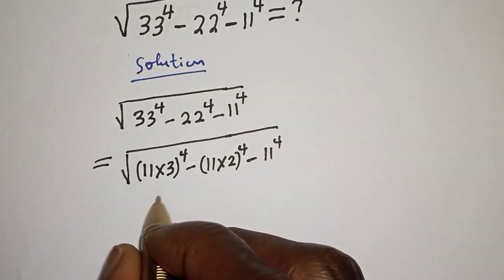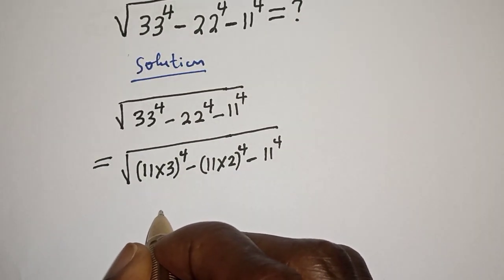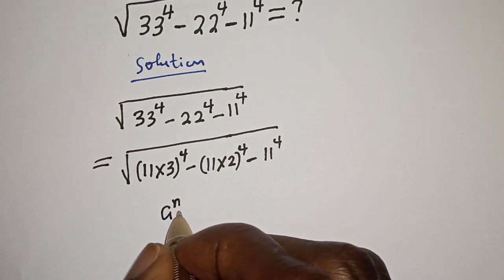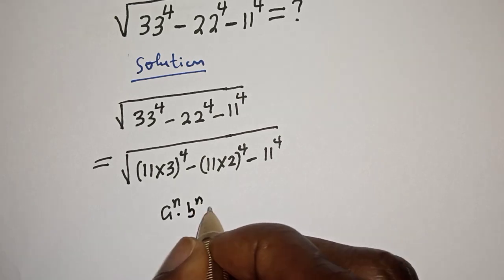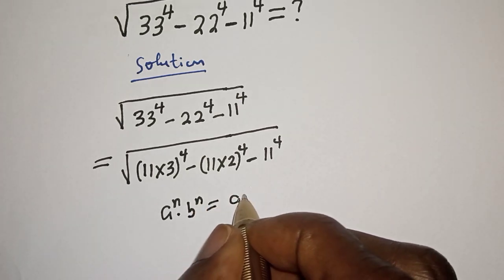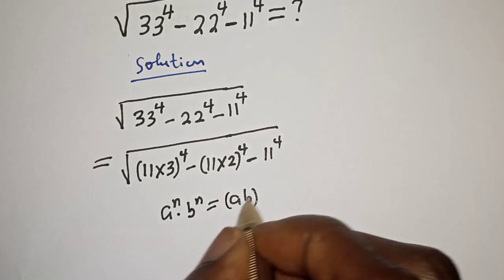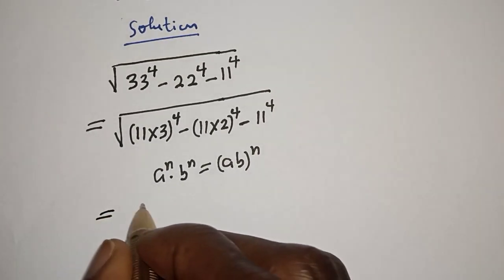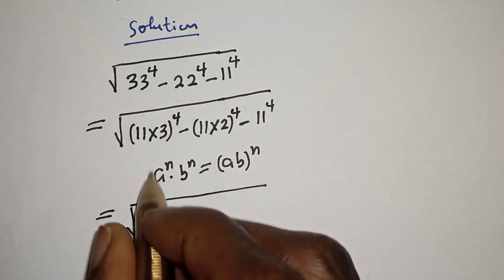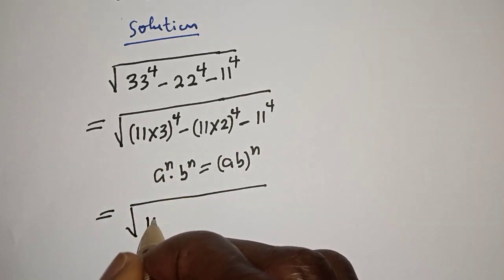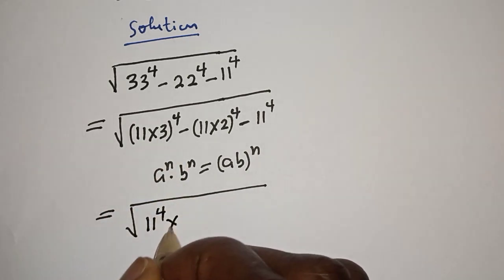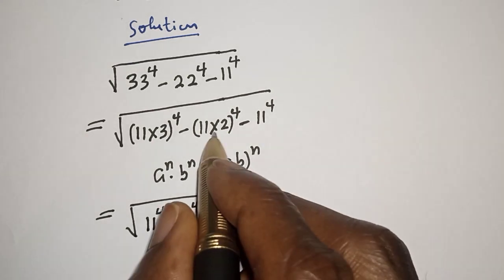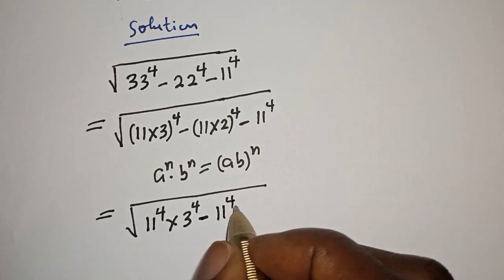Take note of this exponential rule: if you have a raised to power n multiplied by b raised to power n, this is equal to ab raised to power n. So this becomes square root of 11 raised to power 4 multiplied by 3 raised to power 4, minus 11 raised to power 4 multiplied by 2 raised to power 4, minus 11 raised to power 4.